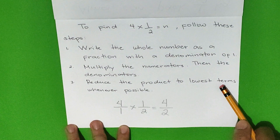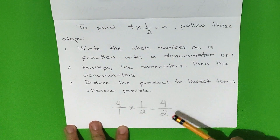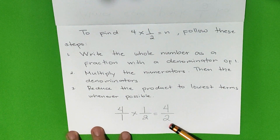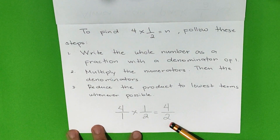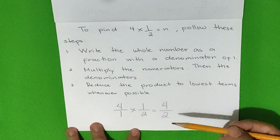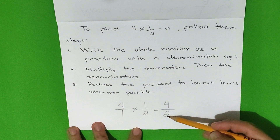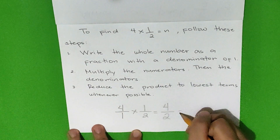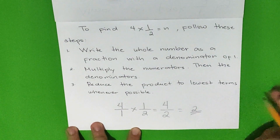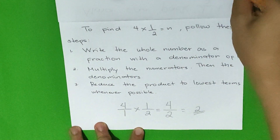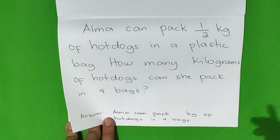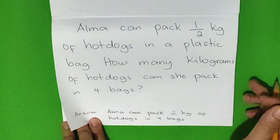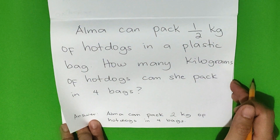The last step is to reduce the product to lowest terms whenever possible. Our product can still be reduced to lowest terms, so let us divide the numerator by the denominator. 4 divided by 2 is equal to 2. So the answer for our math problem is: Alma can pack 2 kilograms of hot dogs in 4 bags.